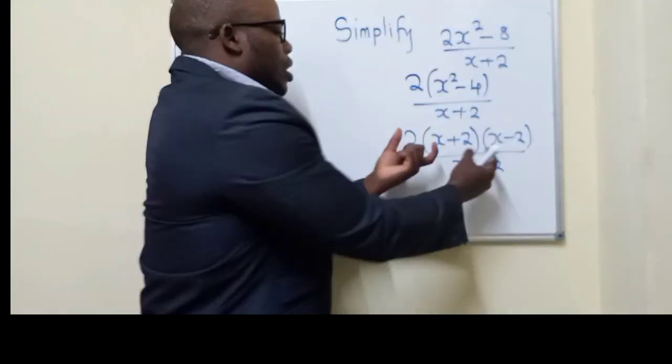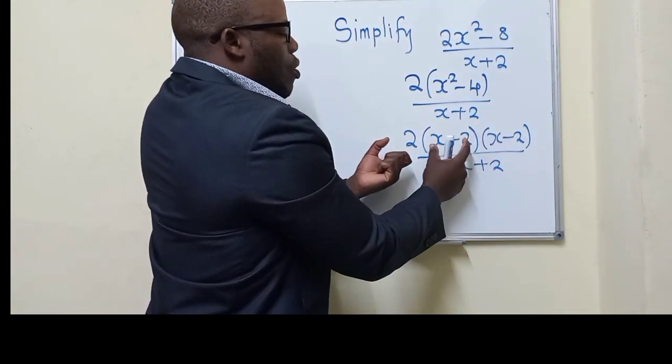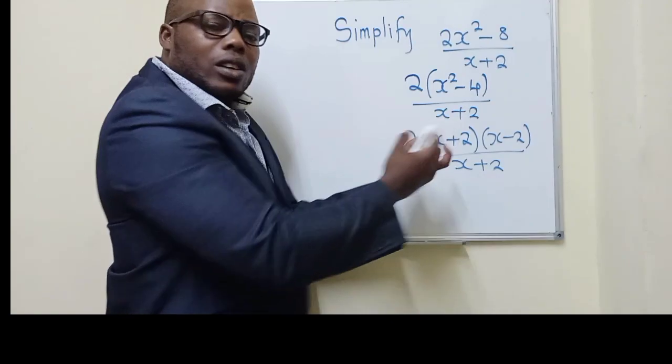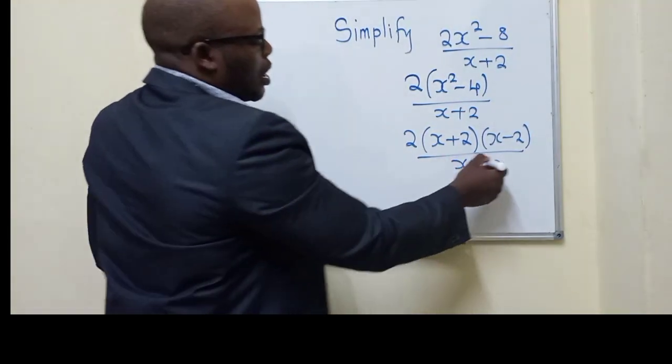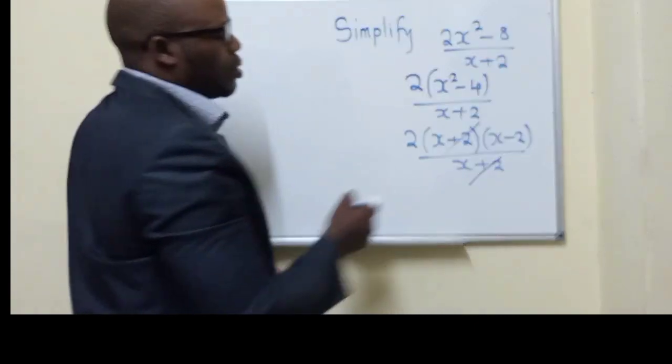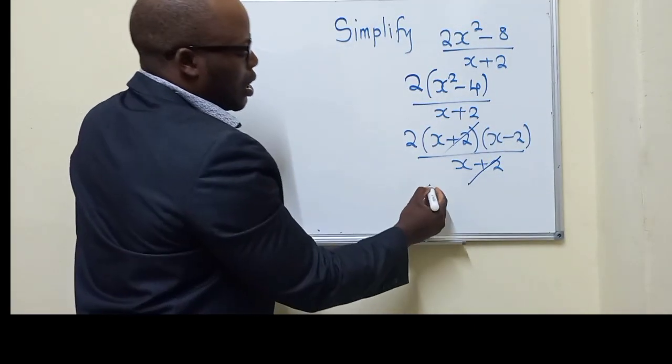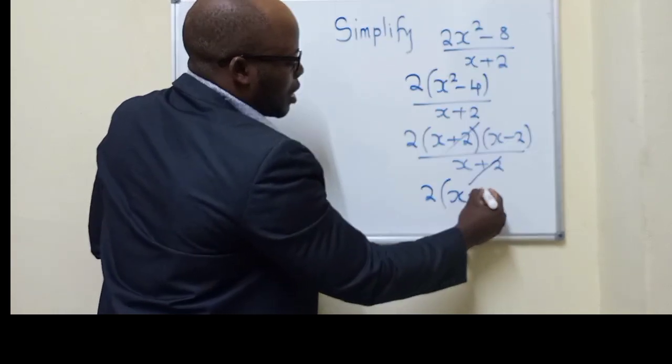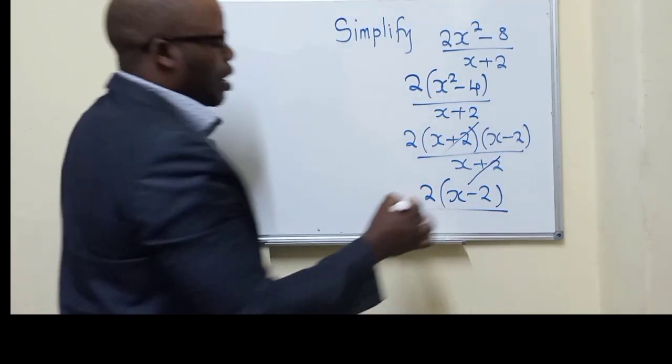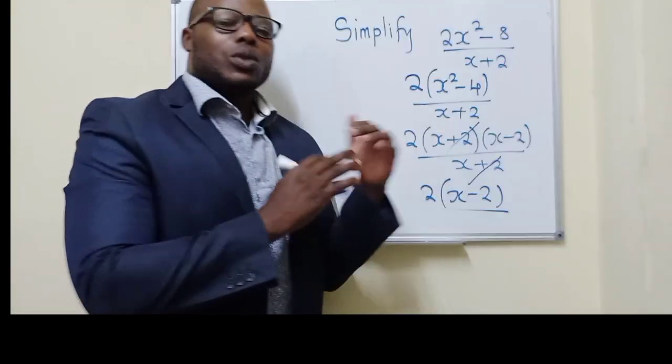So you can either start with this or start with this, whichever. You can interchange them, it's okay. So now from this stage, you can do this, you see? We have the 1 here and the 1 here. So x + 2 right here, x - 2 like this. And this is our solution.